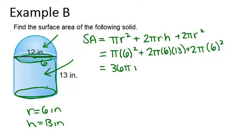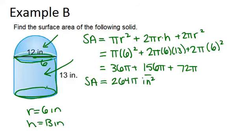we have 36 pi plus 156 pi plus 72 pi. And combine all of those together, and you get 264 pi. And then our units will be inches squared because we're talking about surface area.